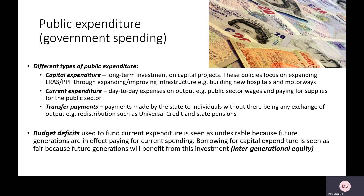Capital expenditure is government spending on long-term capital projects. These are normally linked to supply-side policies designed to create potential economic growth, moving the long-run aggregate supply curve outwards. We're looking at infrastructure: building new hospitals, motorway networks, upgrading communications technology, new schools, port facilities — and a great current example is High Speed 2, costing tens of billions of pounds.